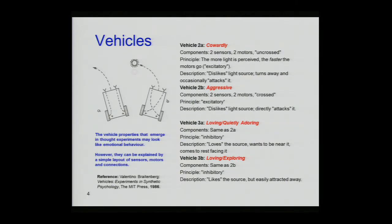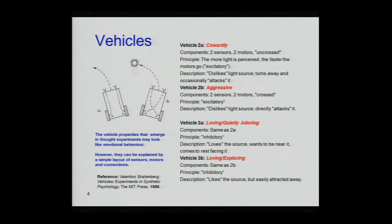The first example is the vehicles of Valentino Braitenberg. He used simple vehicles that had two light sensors at the front and two wheels at the back. The connections from the sensors to the wheels could be parallel or crossed, and could be excitatory or inhibitory. Depending on this configuration, the vehicles have different behaviors. Interestingly, these simple behaviors were associated with quite complex human emotions — cowardly, aggressive, loving, adoring, exploring. For example, the vehicle on the right: if it receives light at the left sensor, the right wheel would accelerate toward the light source — an implementation of aggressive behavior.